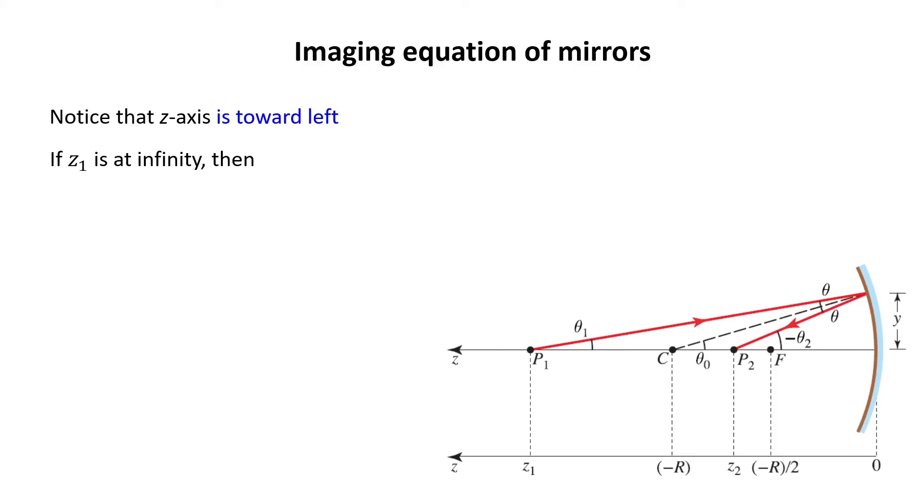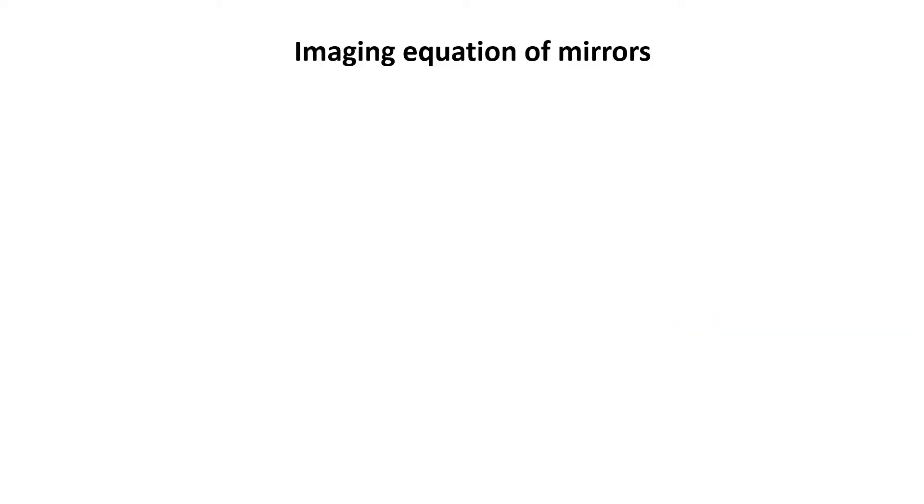Now, if I put my object P1 at infinity, then if I come back to the previous slide, if z1 goes to infinity, 1 over z1 goes to 0. And then z2 becomes minus R over 2.